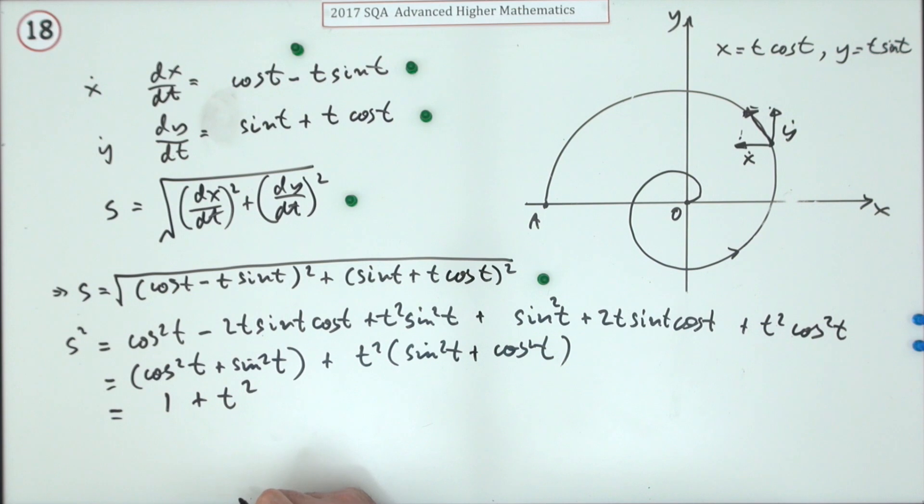Sin squared and cos squared comes to one, so that's just 1 plus t squared.